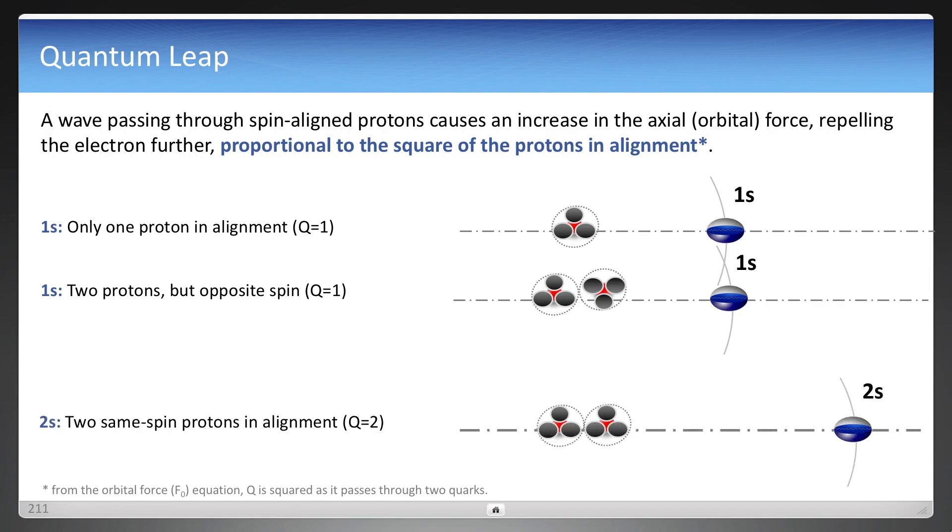And then as will be shown, as you start to increase the number of protons, eventually you have to get the same spin protons such as lithium. And when they are now in alignment, as the wave is passing through multiple quarks, now it affects the orbital force, which now has a stronger propelling force, pushing it out to the next orbital, in this case 2s.